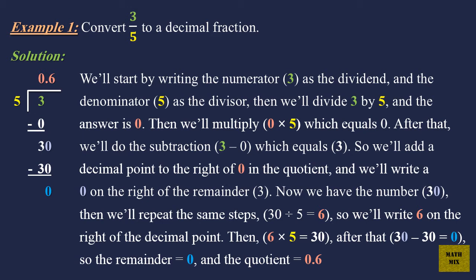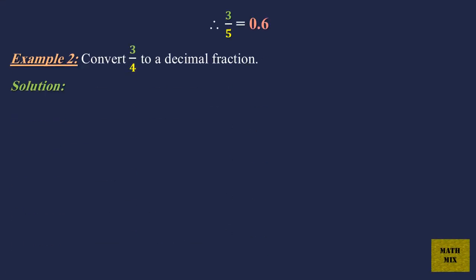After that, 30 minus 30 equals 0. So the remainder equals 0, and the quotient equals 0.6. Therefore, 3 over 5 equals 0.6.